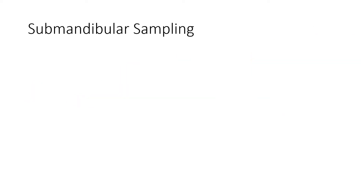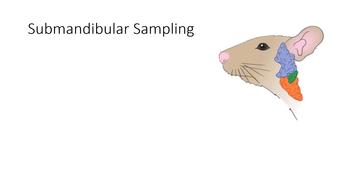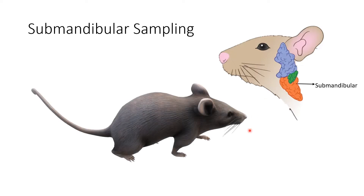The next method is submandibular sampling. In this diagram you can see the submandibular region. We take the animal, identify the submandibular region, then insert a capillary and collect the blood.